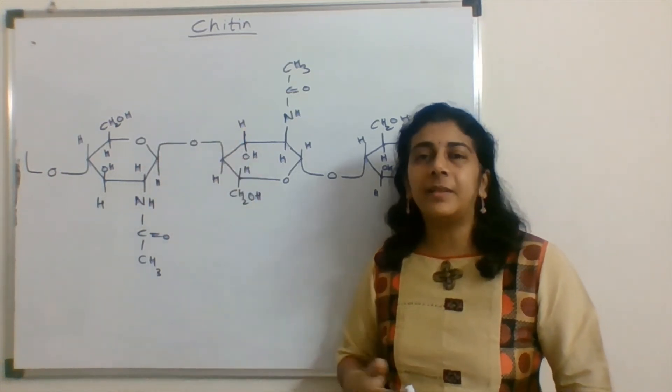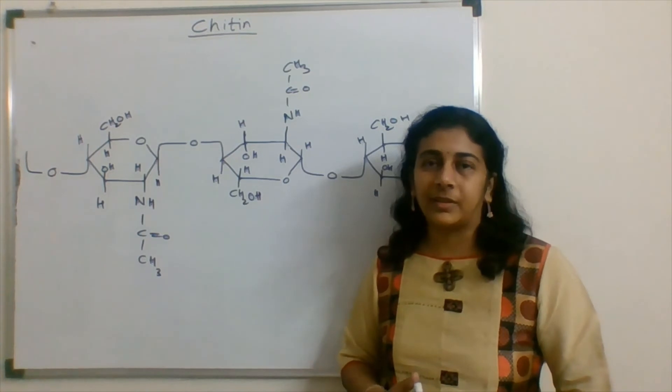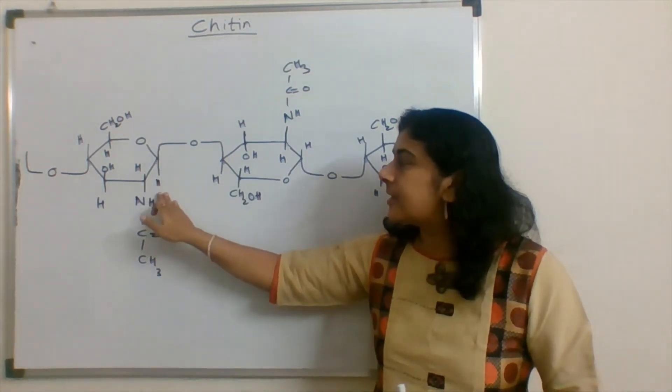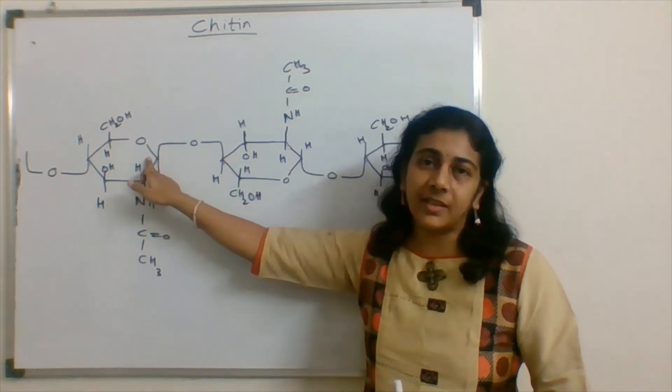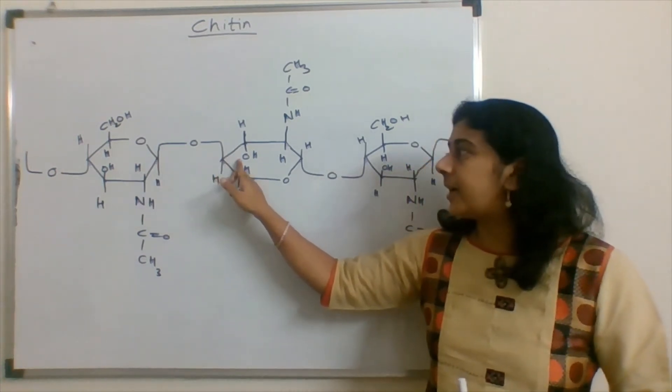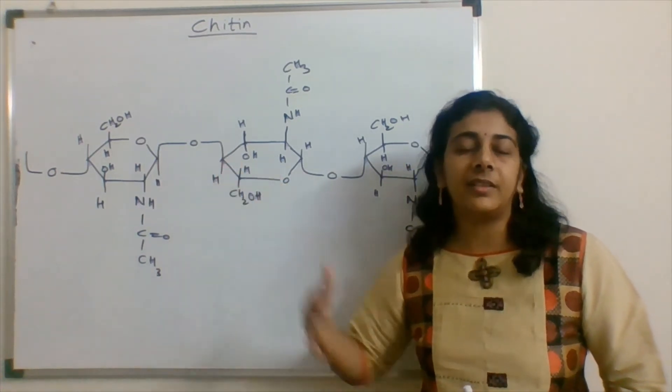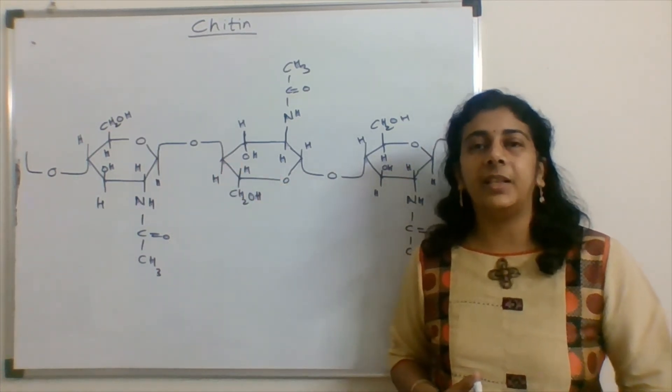then we call it as a beta-anomer. So here, this is beta, this is the first carbon, and it is combining with the fourth carbon of the next residue of N-acetylglucosamine.